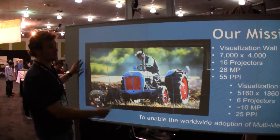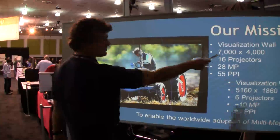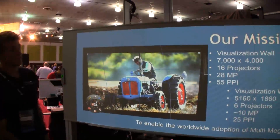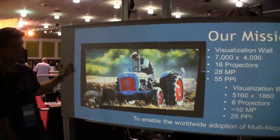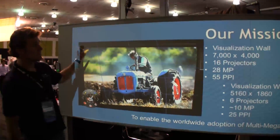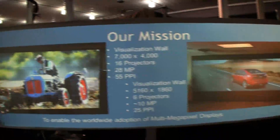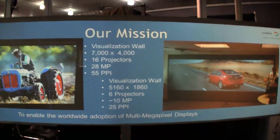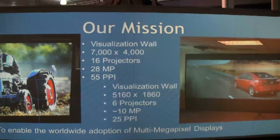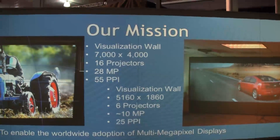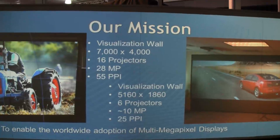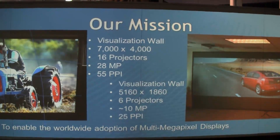The ultimate resolution of this display is 7,000 by 4,000. What they're doing is achieving something that is 55 pixels per inch. So in every inch you're going to have a really high pixel count so you can't tell — they don't lose any perception of reality.